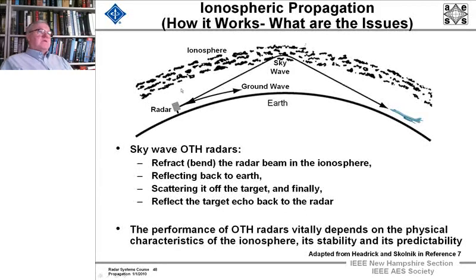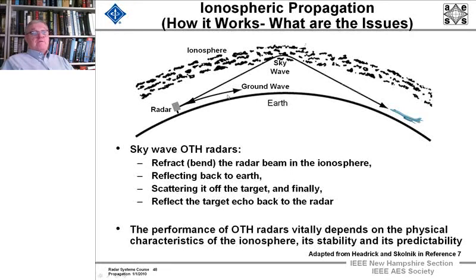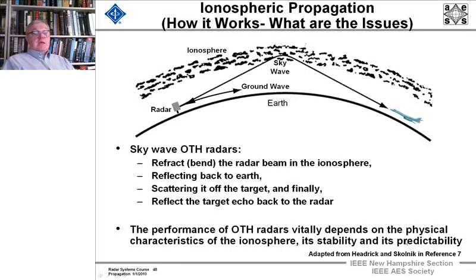When we're dealing with the ionosphere, it is one of the most lossy, dispersive media that you'd ever want to think about. This is an example of ground wave propagation with HF, which can go hundreds of miles. And this is what we call sky wave, where it's bouncing off the ionosphere. The performance of an OTH — over-the-horizon — radar vitally depends on the physical characteristics of the ionosphere, its stability, and predictability.